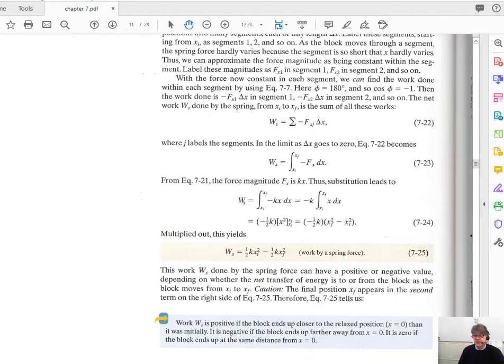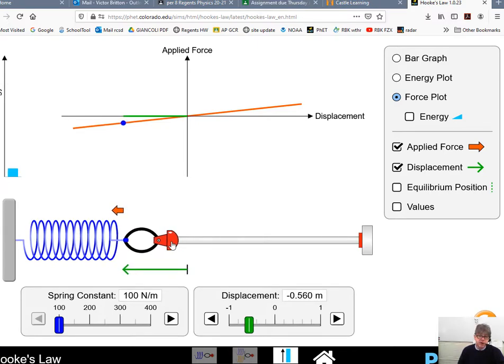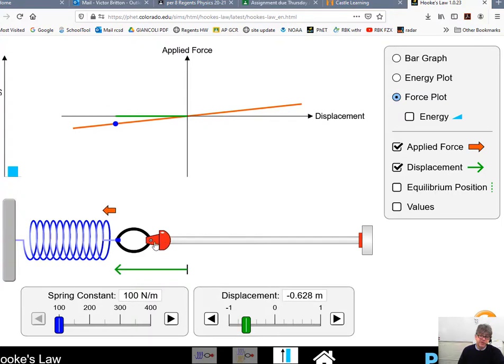Going back to my animation, what this animation does not show is the work done by the spring. So everything I'm talking about on this animation is about the work done by me. Meanwhile, the spring exerts a force. The spring force is doing negative work, and that's what the author of the AP book, an AP-level physics course like this wants you to understand from both perspectives.